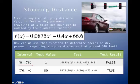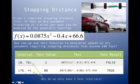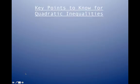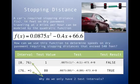So the solution is (76, ∞), meaning stopping distances exceed 540 feet at speeds greater than approximately 76 miles per hour. Make sure you understand why we only used two test intervals here — because negative speeds are not meaningful in this context.